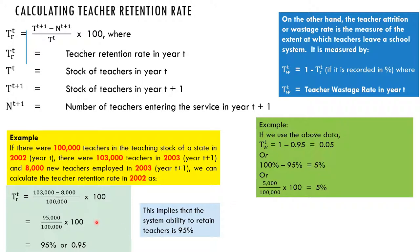The 5 percent represents 5,000 out of 100,000 teachers. So 5,000 over 100,000 times 100 gives us 5 percent. This means that out of the 100,000 teachers in the previous year, 5,000 of them left the system at the end of that year. It was the 8,000 newly employed teachers added to the 95,000 that were left that made up 103,000 teachers. This implies that the teacher attrition rate is 5 percent — that is the rate at which teachers leave the system.